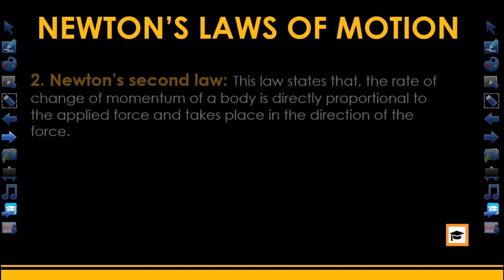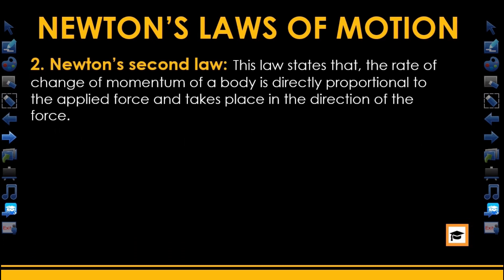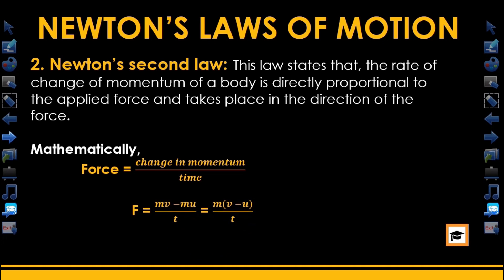Let's take a look at the second law. The second law states that the rate of change of momentum of a body is directly proportional to the applied force and takes place in the direction of the force. Mathematically, force equals change in momentum over time, where change in momentum equals mv minus mu all over t. If the body has a constant mass, you can factor the mass out to have m(v minus u) all over t.